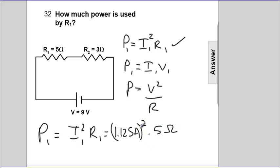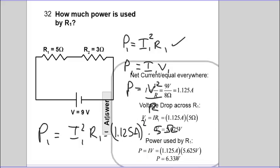If we do 1.125 squared times 5, you can do this with your calculator yourself. You end up with about 6.33 watts.